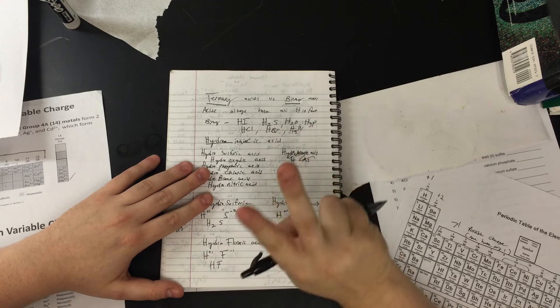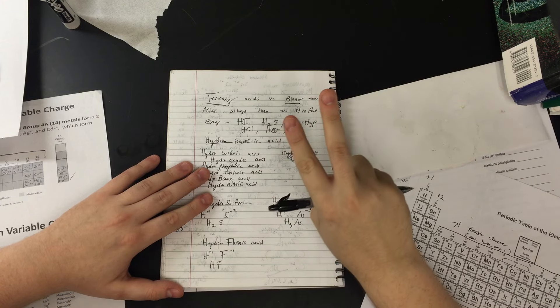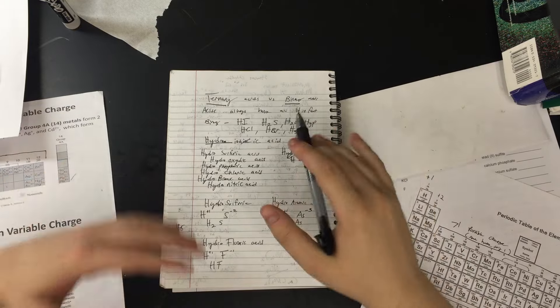Binary, just like binary covalent, means two different types of atoms. Ternary means more than two. That simple.